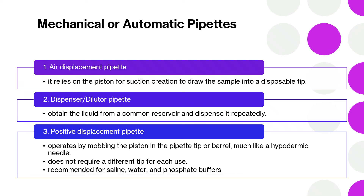Under automatic or mechanical pipettes, there are three types: air displacement pipettes, dispenser or diluter pipettes, and positive displacement pipettes. What are the differences among these types?